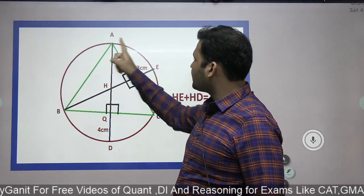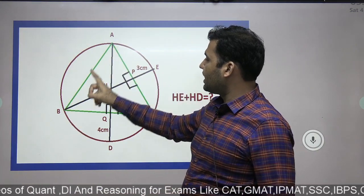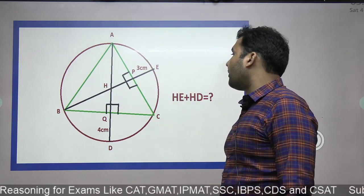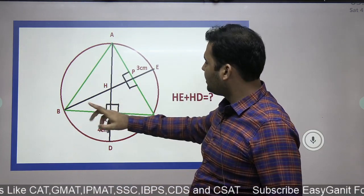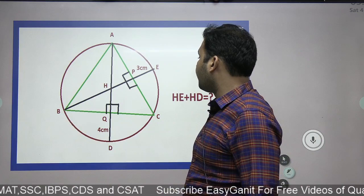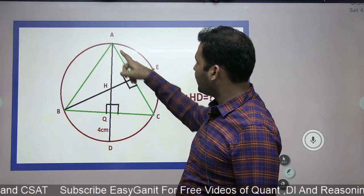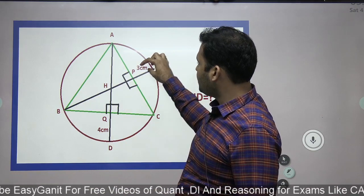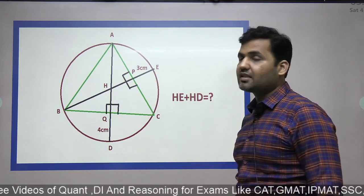There is a triangle ABC and you can see that this red circle is circumscribing the triangle ABC, because the vertices of triangle ABC are on the circumference of the circle. AQ is an altitude because it is perpendicular to the opposite side BC. BP is also an altitude because it is perpendicular to side AC from vertex B. The line BP is extended meeting the circumference of the circle at E, and line AQ is extended meeting the circumference at D. The length of PE is given as 3 cm and the length of QD is 4 cm. We are supposed to find the length of HE plus HD.